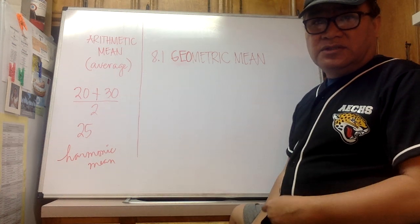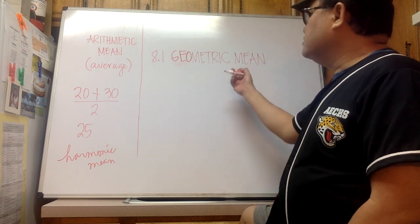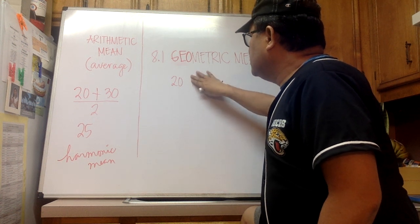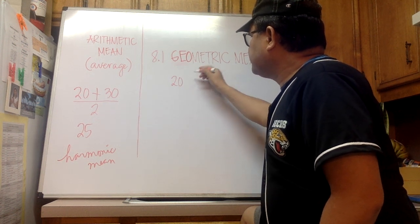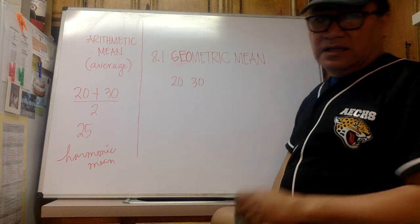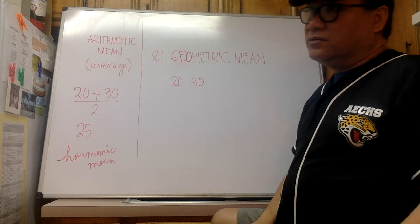So if you're ready, I'm going to explain geometric mean now. Say we're given the same numbers, 20 and 30, and we are interested in the geometric mean of those two numbers. Let me write them down here: 20 and 30.